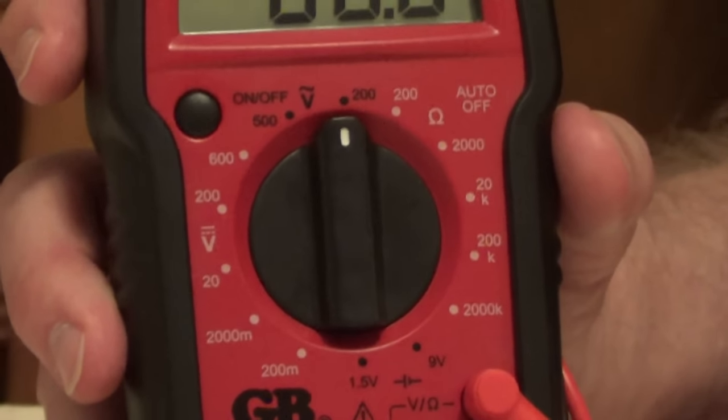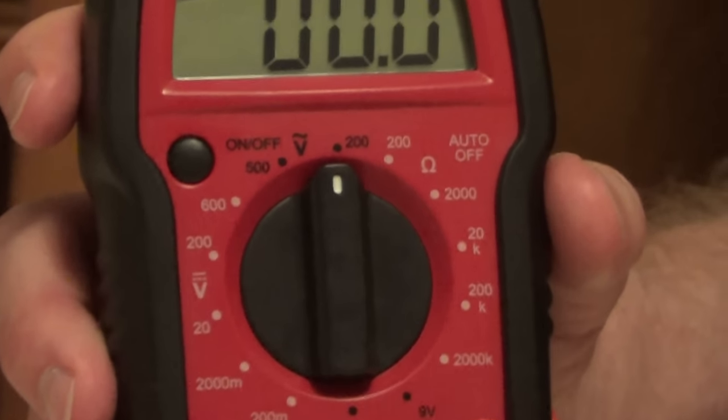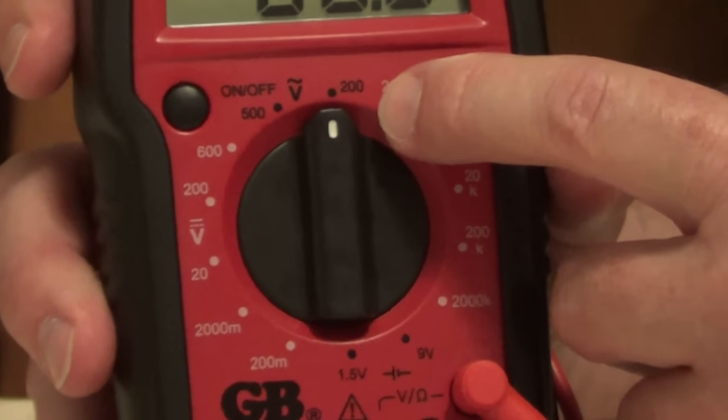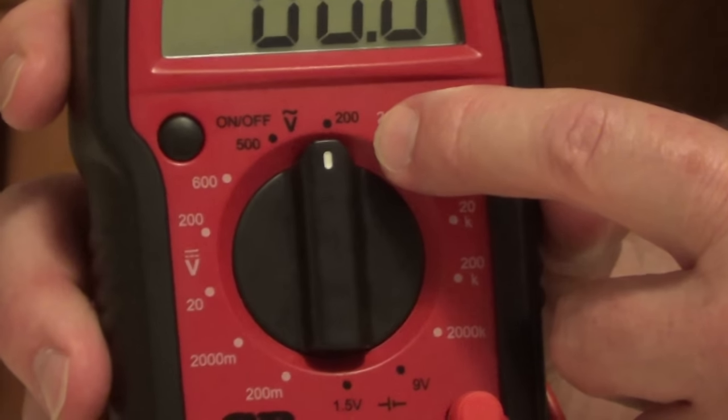The V with a single wavy line over the top of it is alternating current. So you have a setting for 200 and 500. If you're checking outlets at 120 volts, you would set it to 200.